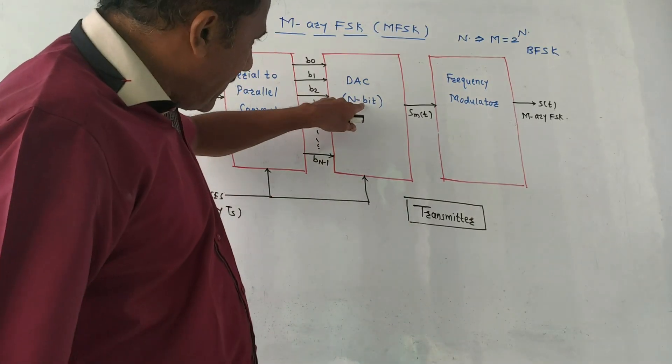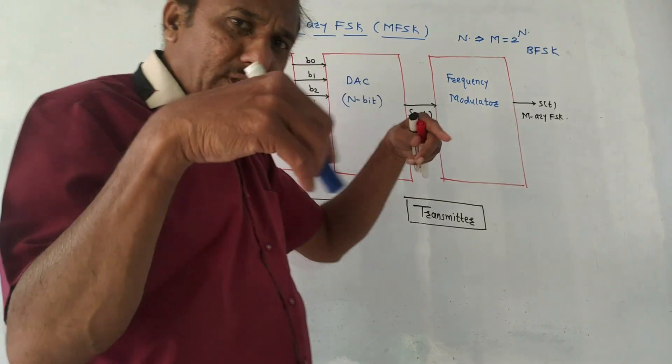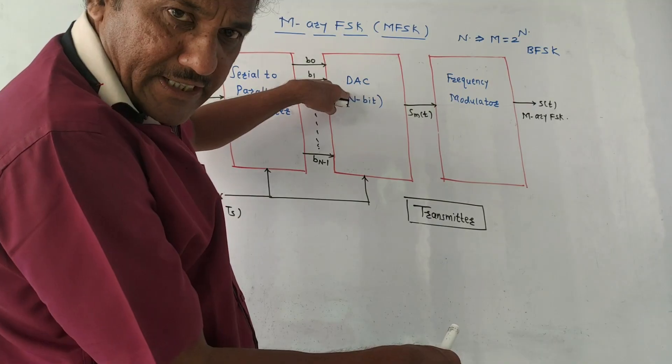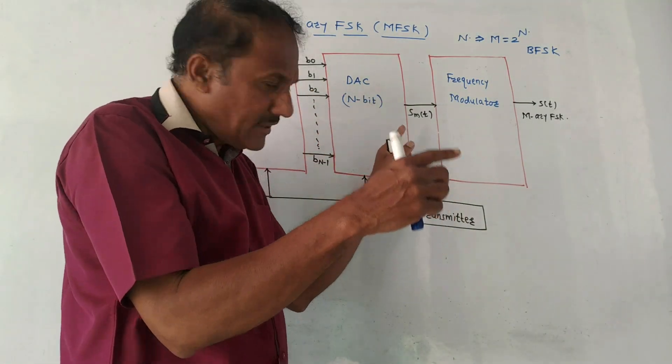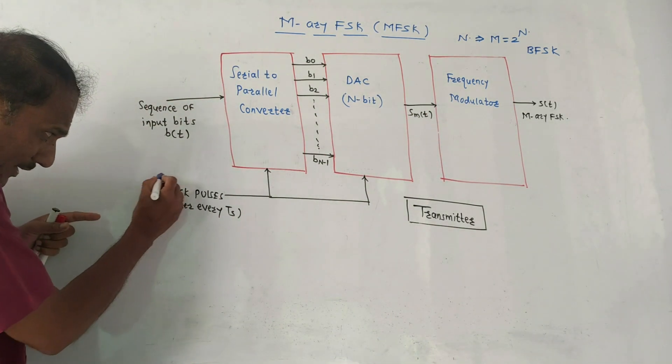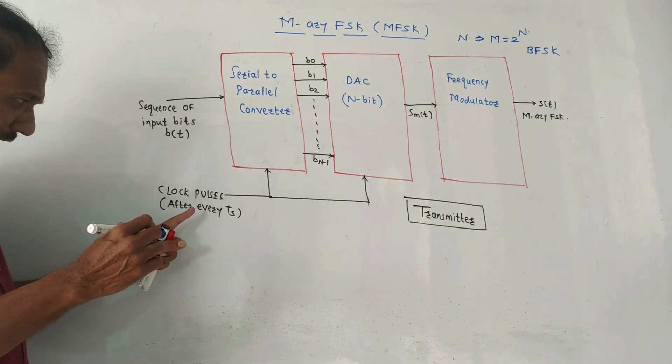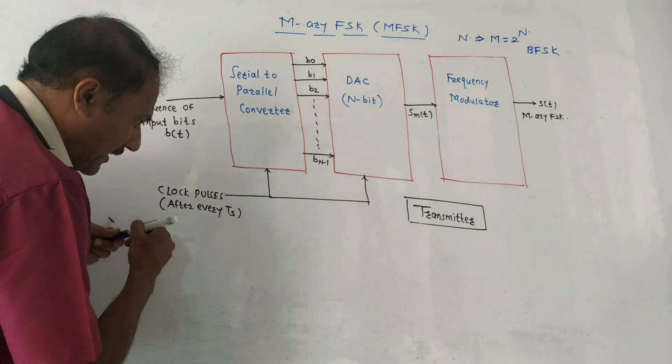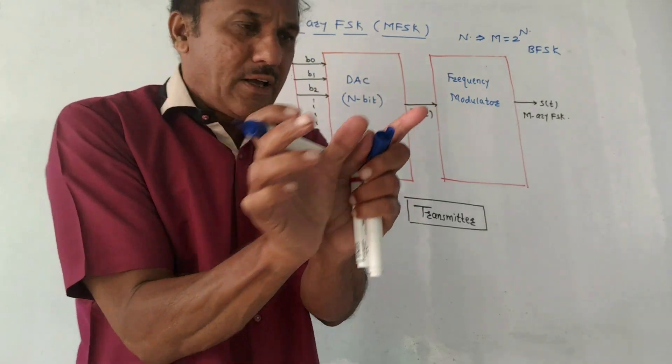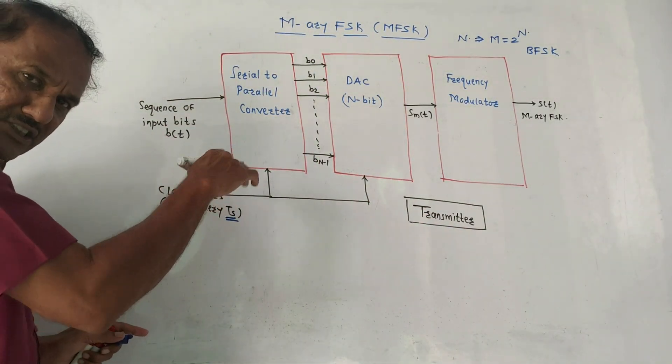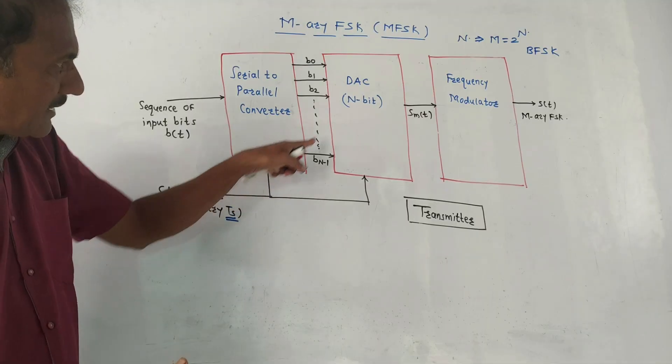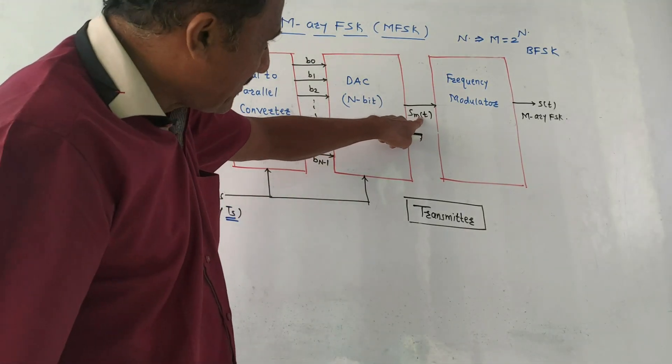The next block is DAC, that is Digital to Analog Converter. It is basically an n-bit DAC depending on the requirement. As the name indicates, DAC converts digital signal into analog signal. The output of this block is denoted by SM of t. One more thing: we have clock pulses. The clock pulse repeats after the duration TS, where TS is called symbol duration, that is the duration of each symbol. The clock pulse changes after every TS, so this clock signal is applied to serial to parallel converter as well as DAC.